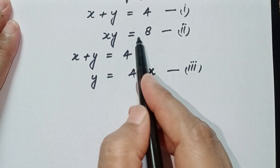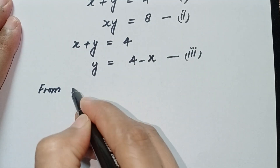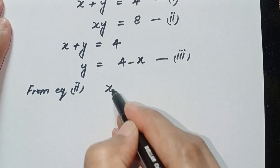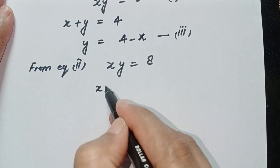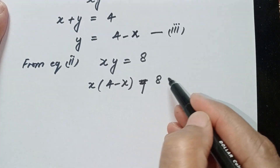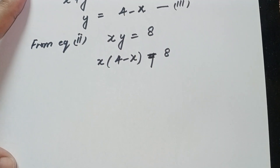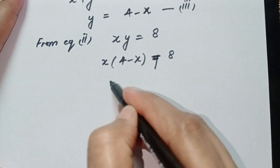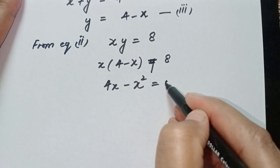Now plug in this value into equation 2. From equation 2 we can write x times y is equal to 8, and we plug in the value of y: x times (4 minus x) is equal to 8. In the next step we multiply them out: 4x minus x squared is equal to 8.